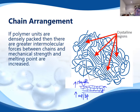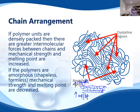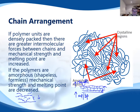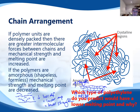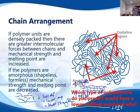Where there is more branching, we have less dispersion forces. Where we have branching like this, we do not have the same type of packing, and therefore there are less dispersion forces between the large molecules. Less dispersion forces equals lower melting point and also lower strength. So for LDPE and HDPE, the lower melting point would be the low-density polyethylene, because it has fewer dispersion forces per molecule than the high-density variety, which is packed much more tightly together.